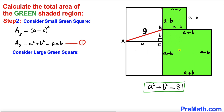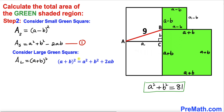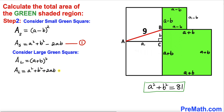Now let's consider the large green square with side length A plus B and calculate its area as well. The area A sub L equals (A plus B) squared. Applying the identity, A sub L equals A squared plus B squared plus 2AB. Let's call this equation number two.